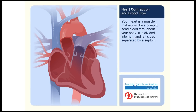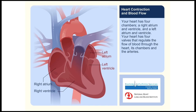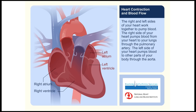Your heart is a muscle that works like a pump to send blood throughout your body. It is divided into right and left sides separated by a septum. Your heart has four chambers: a right atrium and ventricle, and a left atrium and ventricle. Your heart also has four valves that regulate the flow of blood through the heart's chambers and the arteries.